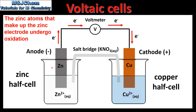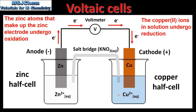At the anode the zinc atoms that make up the zinc electrode undergo oxidation. The electrons lost by the zinc electrode travel in the external circuit to the copper electrode, so the electron flow is from anode to cathode. At the cathode the copper ions in solution gain electrons and undergo reduction to form copper atoms. In addition to the movement of electrons in the external circuit, we also have movement of ions in the salt bridge, which we'll look at in more detail later on.